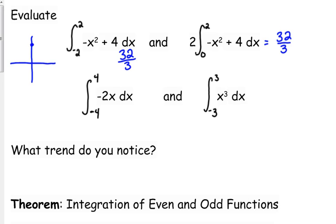And because it's negative x squared plus 4, it is symmetric about the y-axis. So that's why. And it actually has x-intercepts at negative 2 and positive 2.